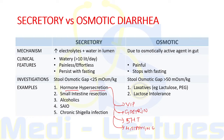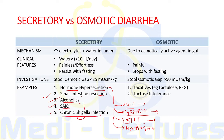Examples of secretory diarrhea include hormone hypersecretion: VIP in VIPoma, gastrin in Zollinger-Ellison syndrome, serotonin in carcinoid syndrome, and histamine in systemic mastocytosis. Small intestinal resection causes secretory diarrhea due to decreased surface area for electrolyte reabsorption. Alcoholics develop secretory diarrhea due to mucosal injury preventing electrolyte reabsorption. Sub-acute intestinal obstruction and chronic Shigella infection can also cause secretory diarrhea. Examples of osmotic diarrhea include use of laxatives like lactulose, polyethylene glycol, and lactose intolerance.